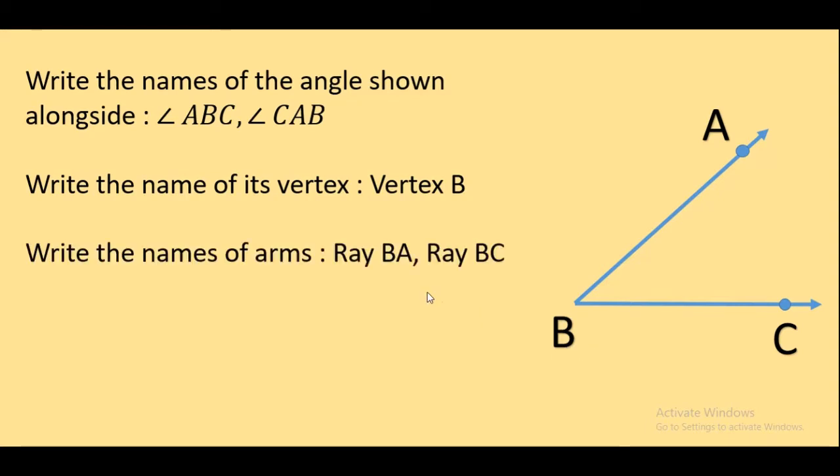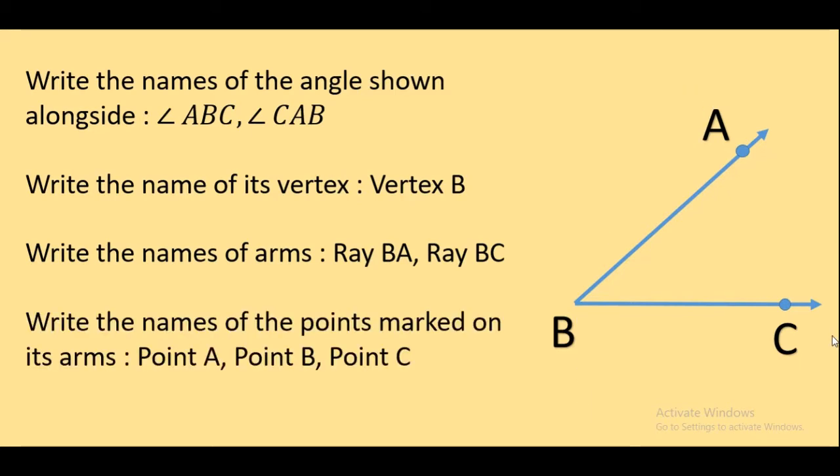Write the names of the arms. The arms are Ray BA and Ray BC. Next, write the names of the points marked on its arms. Point A, point B, and point C.